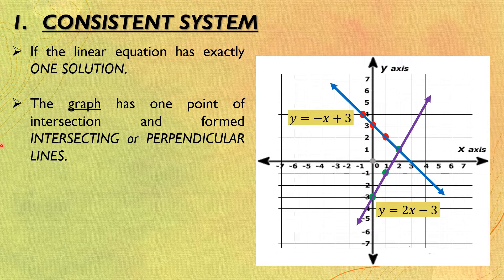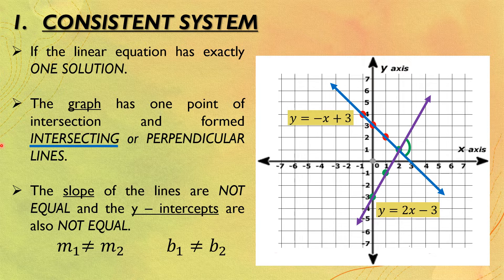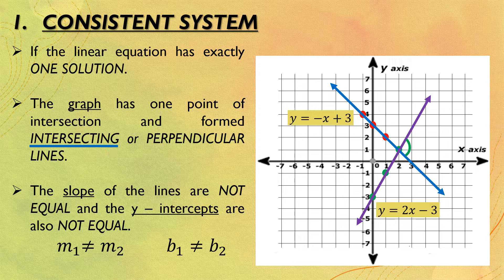Let us first discuss the consistent system wherein the lines form an intersecting line. When we say intersecting lines, or if the graph is formed by intersecting lines, the slope of the lines are not equal and the y-intercepts are also not equal. So we can write this as: m₁ is not equal to m₂ and b₁ is not equal to b₂, wherein m is for the slope and b is for the y-intercept. Notice that the two lines did not form a right angle — that is an intersecting line.